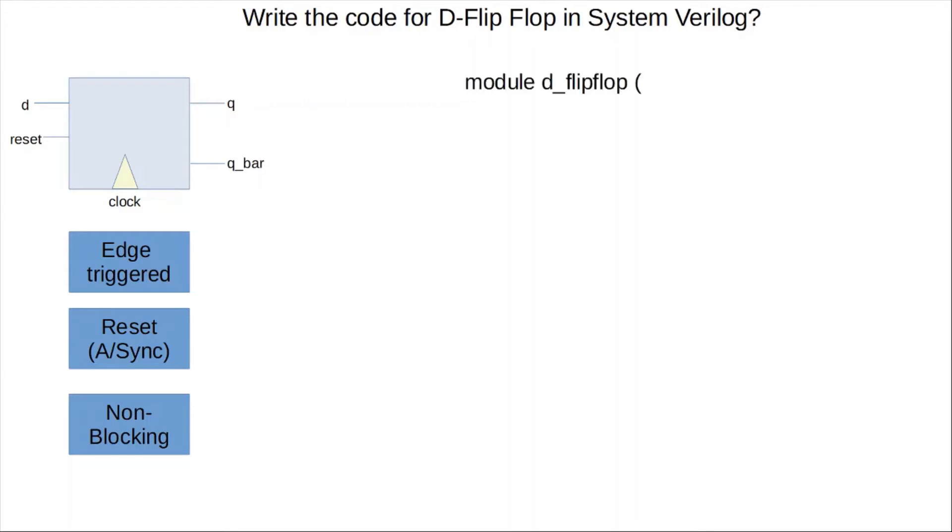So here we first declare a module called d_flipflop. Next we have the ports and their directions: reset, clock, and D are inputs, and then you have your two output ports which we have declared here as logic type so they can have four states: one, zero, X, and Z.